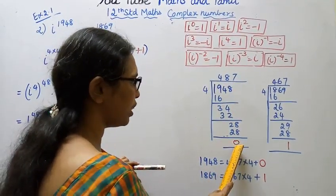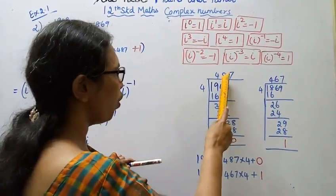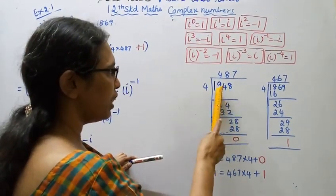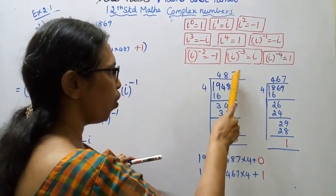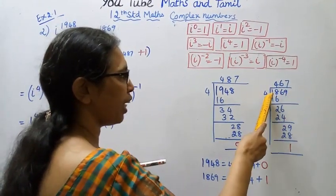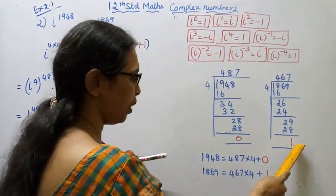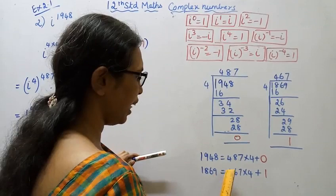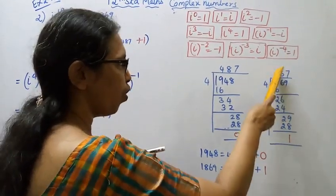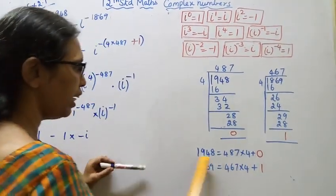For 1948 divided by 4: quotient is 487, remainder is 0. So 1948 = 487 × 4 + 0. For 1869 divided by 4: quotient is 467, remainder is 1. So 1869 = 467 × 4 + 1.